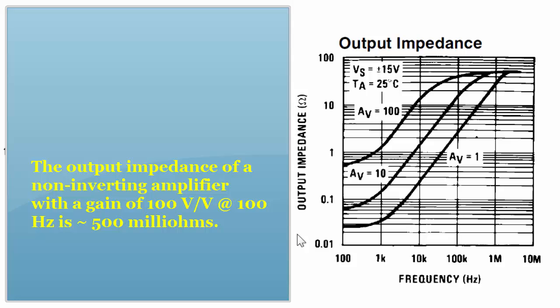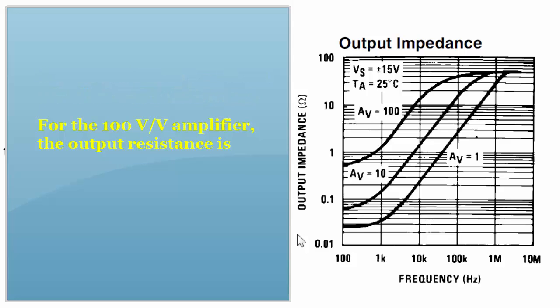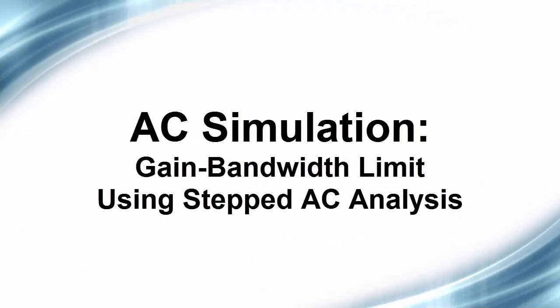Conversely though, if you go higher in frequency, that output resistance starts to increase. In fact, for the voltage gain of 100 volts per volt at 10 kilohertz, it's about 15 ohms. And by the time you reach 100 kilohertz, that output resistance is going to be about 50 ohms.